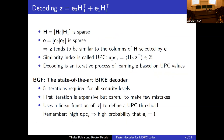We can decode because H is sparse and E is sparse, so Z tends to be similar to the columns of H selected by the non-zero entries of E. The similarity index is called UPC: UPC_i is the scalar product between the i-th column of H and Z^T, i.e., the number of matching entries. The decoding process is an iterative process of learning E based on UPC values.